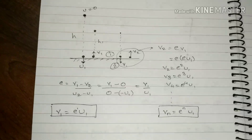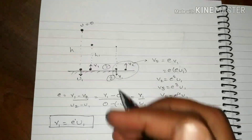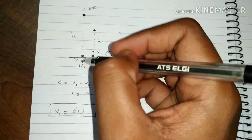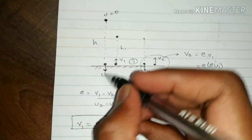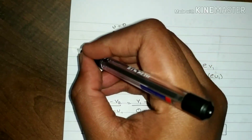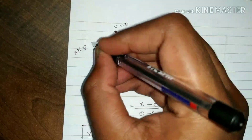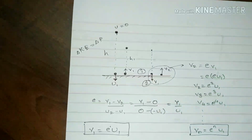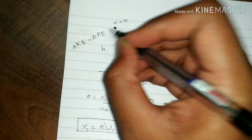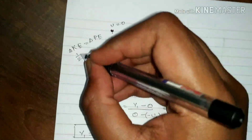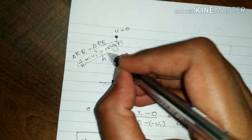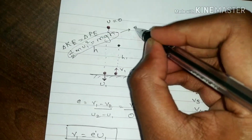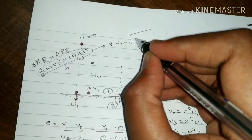Similarly, I will give you the expression for height as well. Initially the height from where the ball was dropped was h, due to which it got velocity u1. According to the law of conservation of energy, the loss in potential energy can be equated with the gain in kinetic energy. So: ½mu1² = mgh, which gives u1 = √(2gh). This means velocity is directly related to height by this expression.